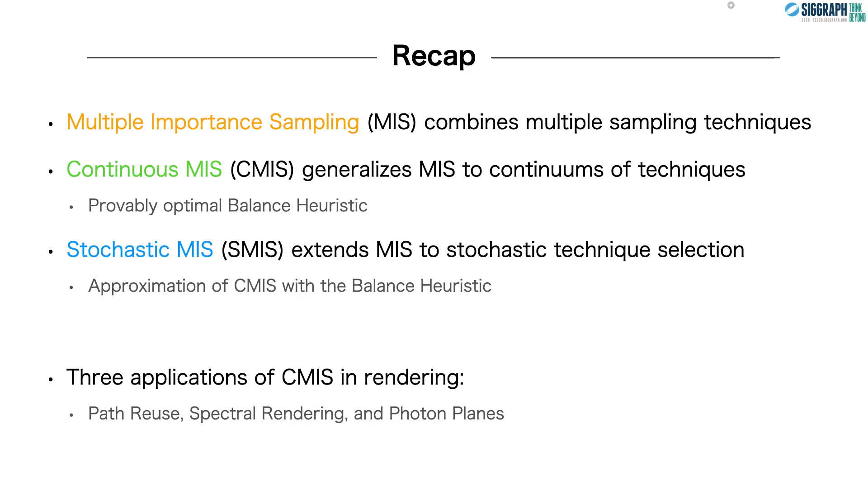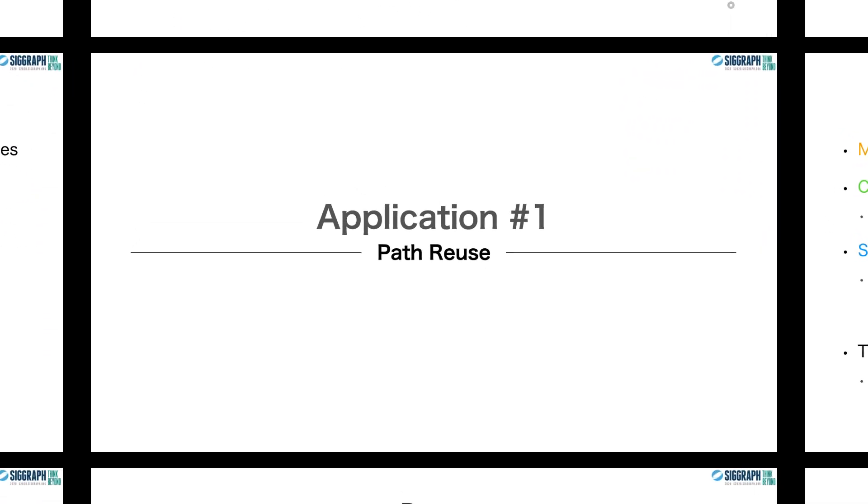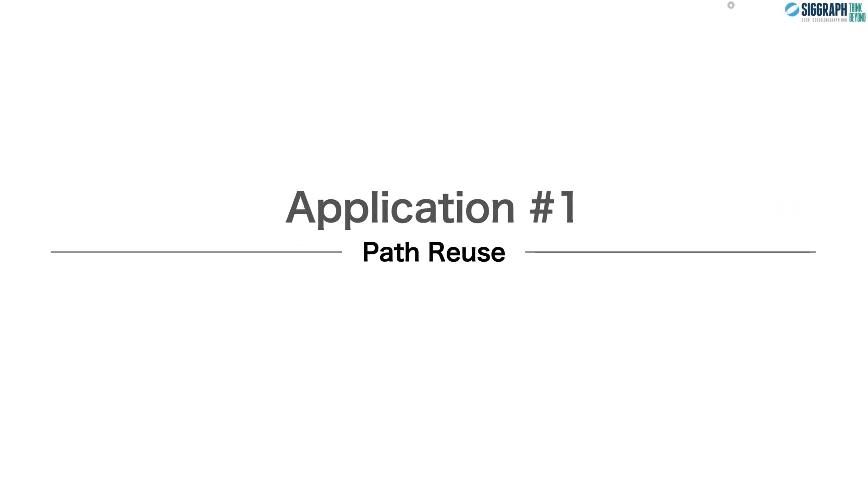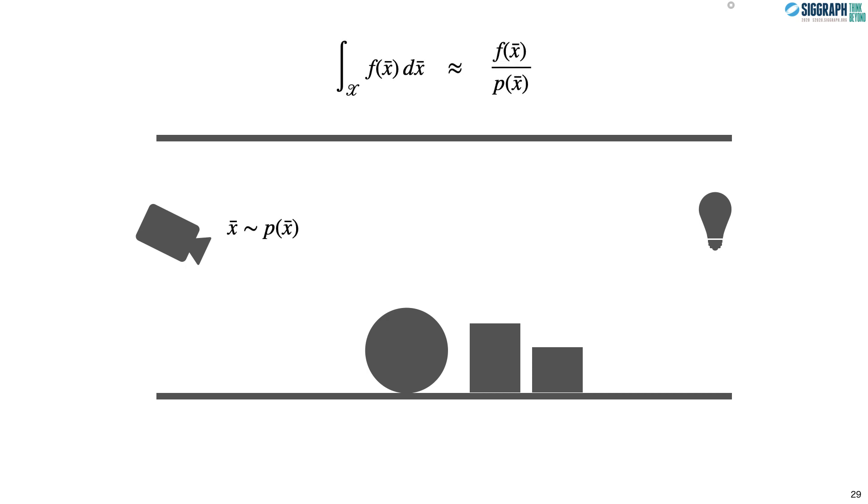For the first application, we have path reuse. In rendering, we want to compute how much light leaves light sources, bounces around the environment, and reaches the camera. This is formulated as a light transport integral over paths, and we can approximate it by sampling paths that light could have traveled.